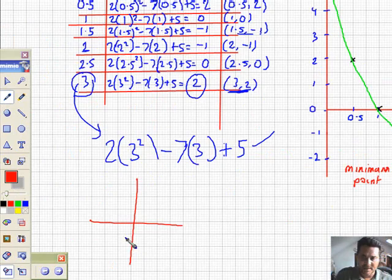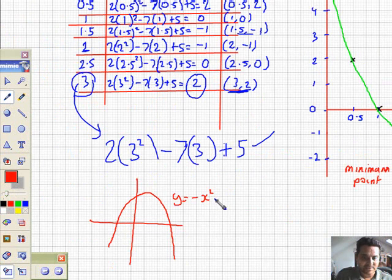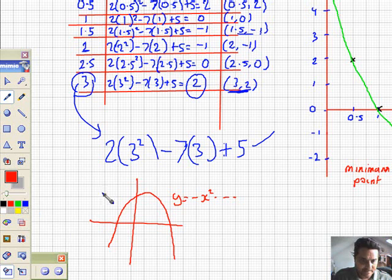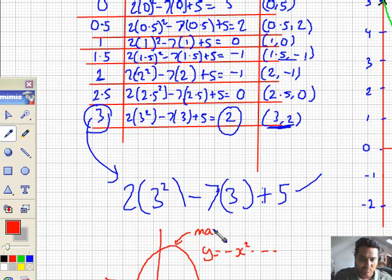If you have a graph like this, for example, these are one of the upside down u's. So this might be the graph of y equals minus x squared. I don't know what the rest of it is. But if it's a negative x squared, you remember from key stage 3 and even from unit 2, the graphs go this way around. And in this case, that would not be the minimum point, but the maximum point.